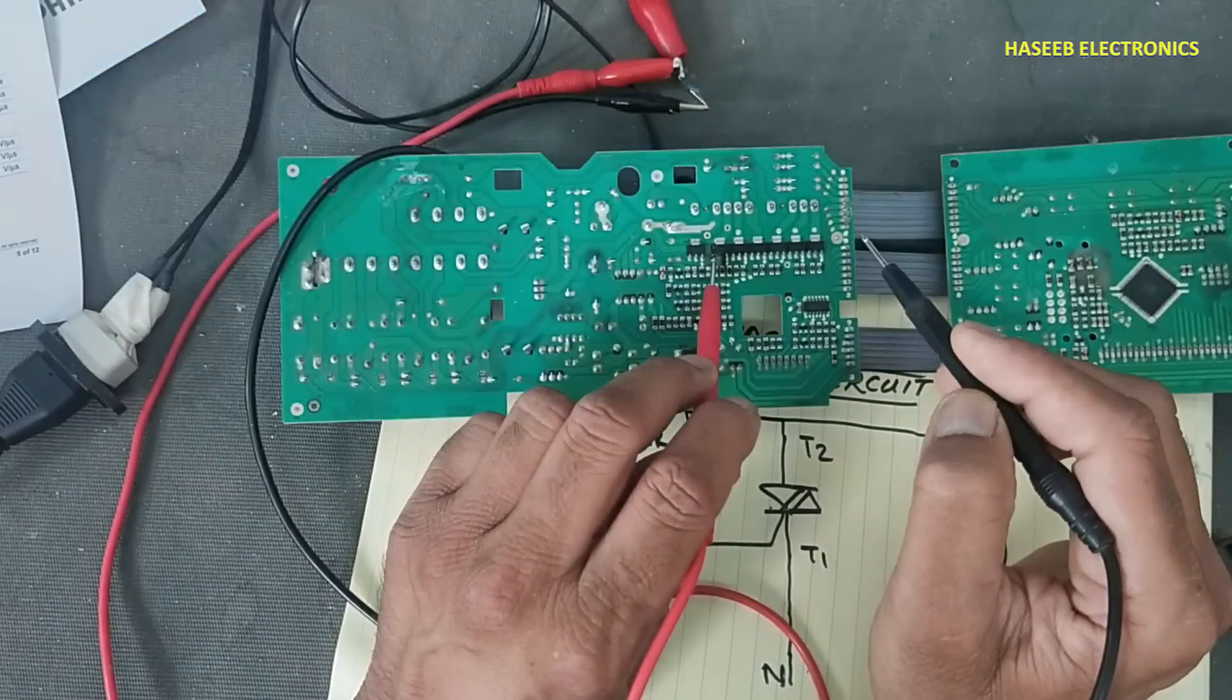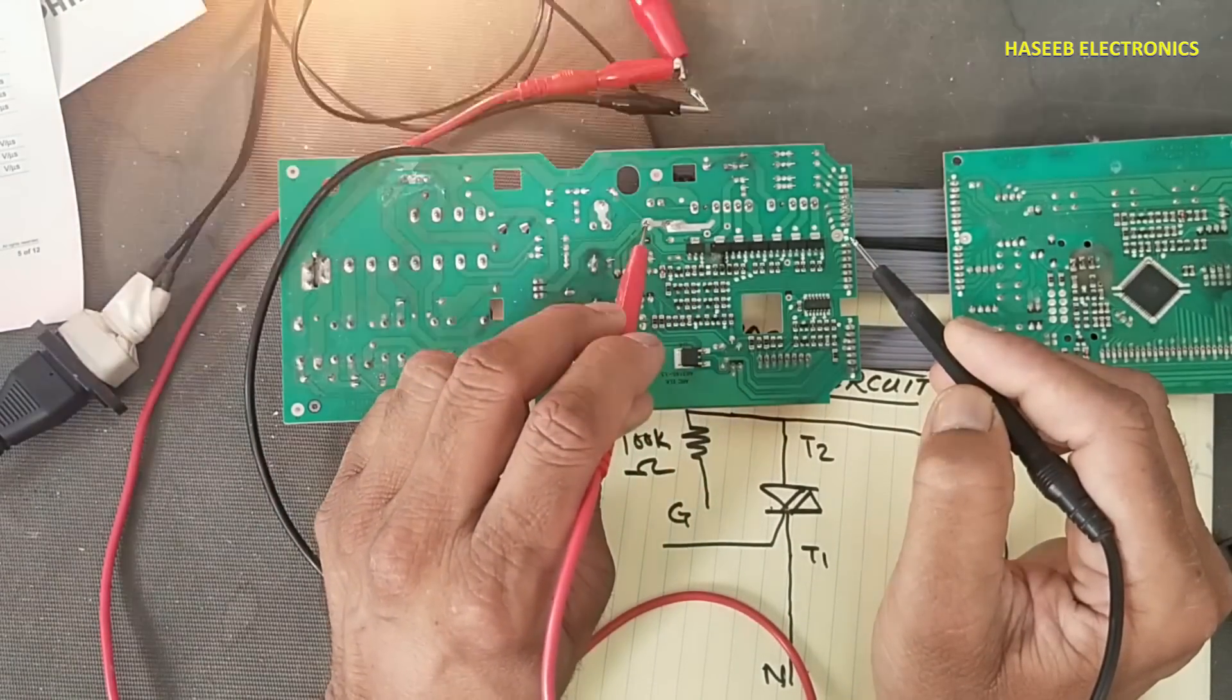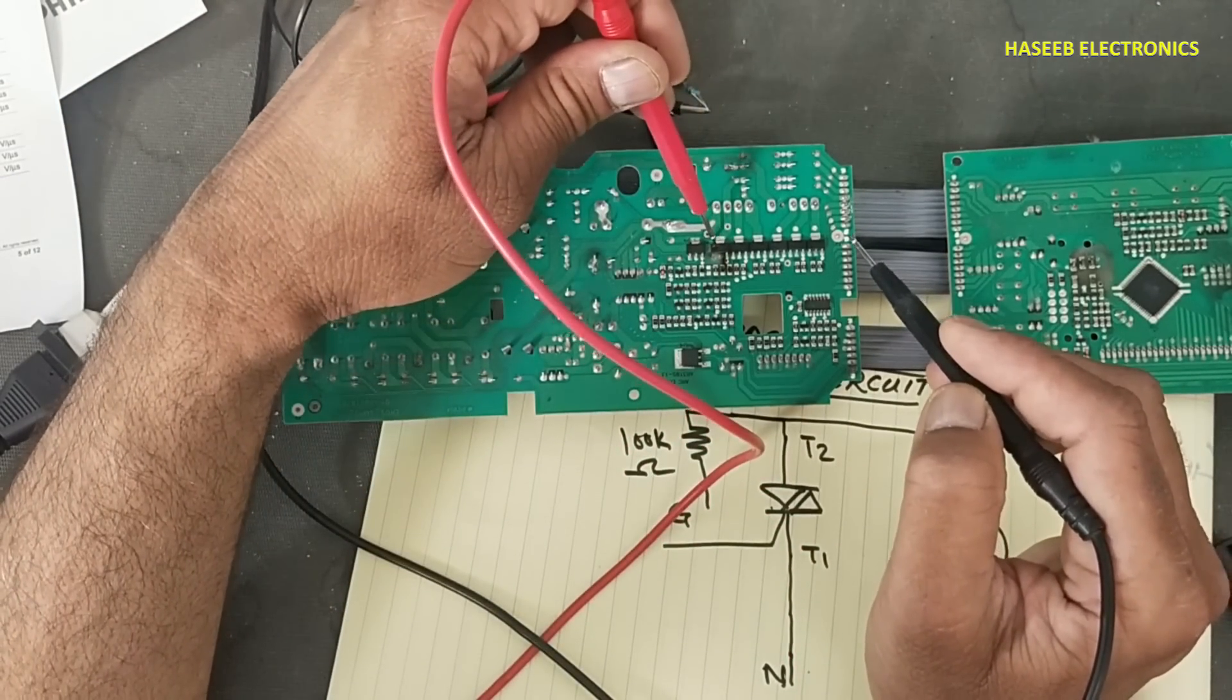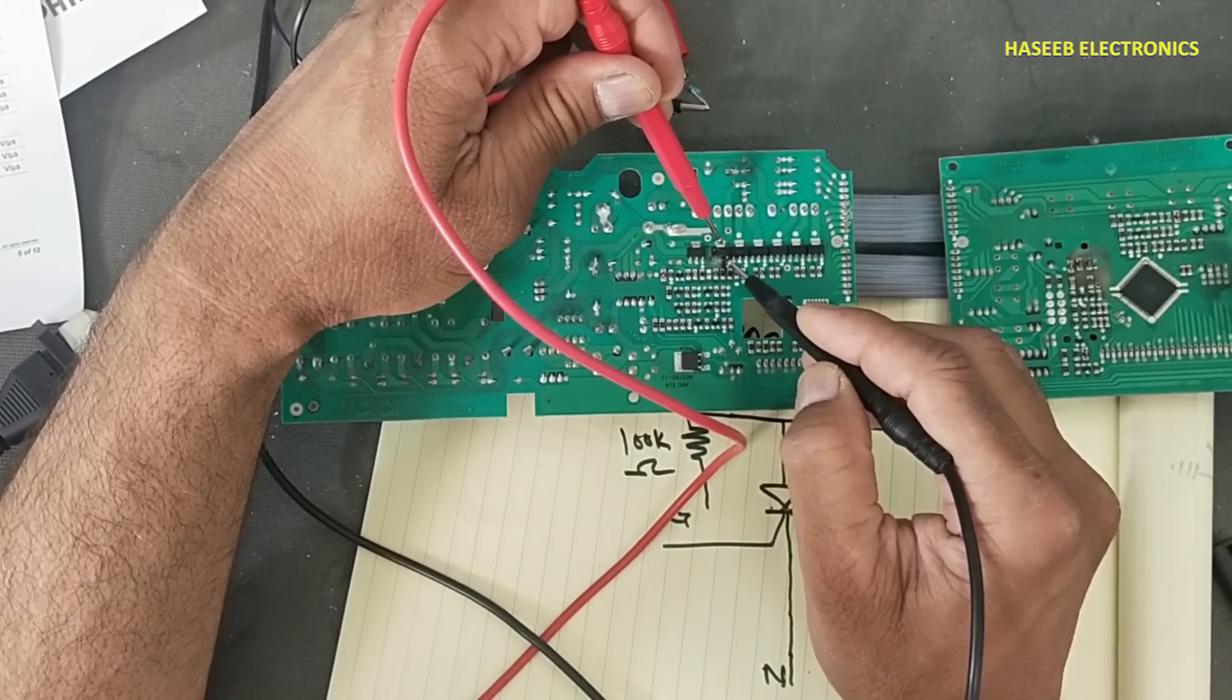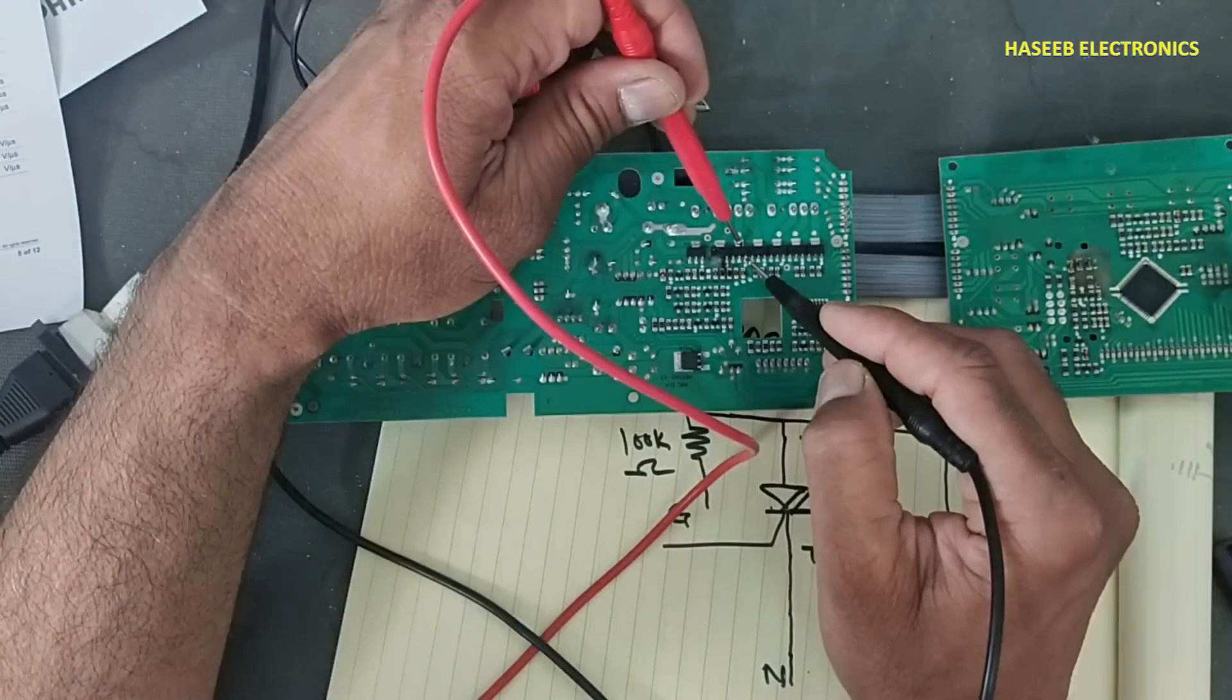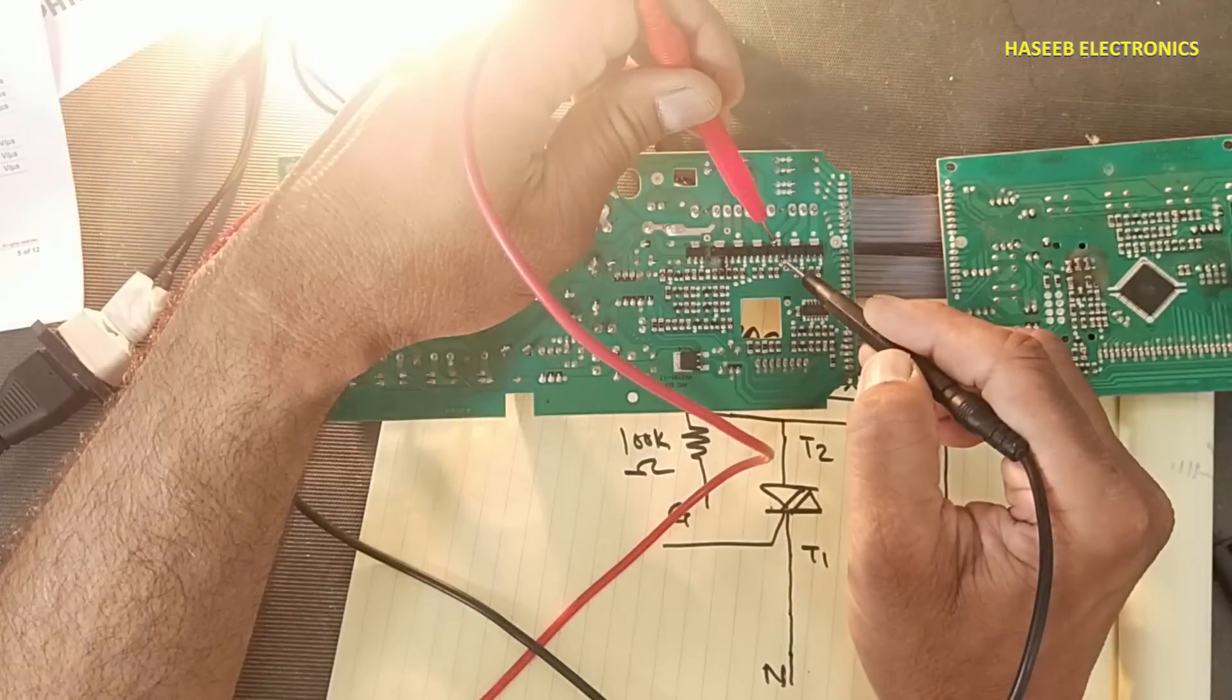This triac is bad. If we touch here, it won't turn on. If we touch pin 1, the lamp is on - the line voltage is reaching this point, but it's not providing output. When we touch the signal to the gate, it's not turning on.